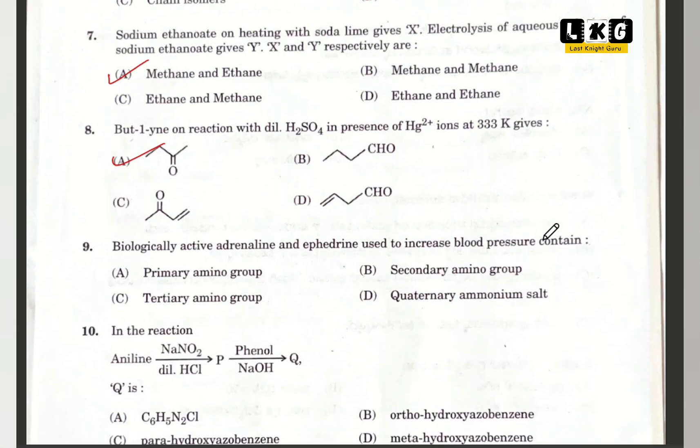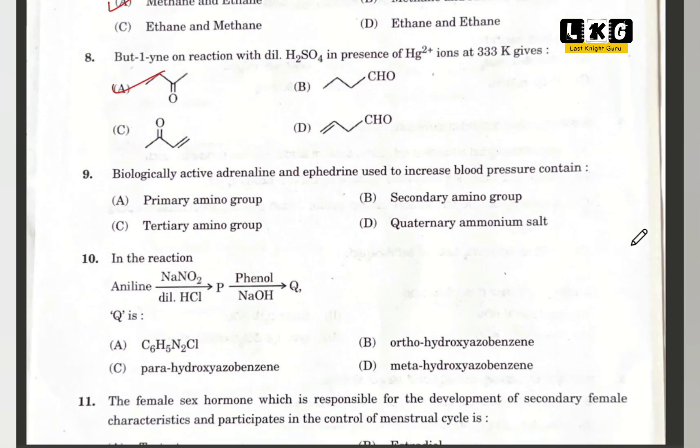Question number 9: biologically active adrenalin and ephedrine, used to increase blood pressure, contains option B — secondary amino group. Question number 10: in the reaction, aniline reacts with NaNO2 to give P, and reacted with phenol gives Q. The compound Q is option C — para-hydroxy azobenzene.